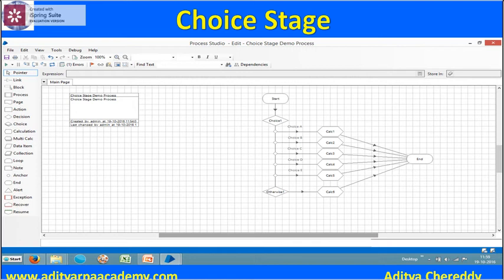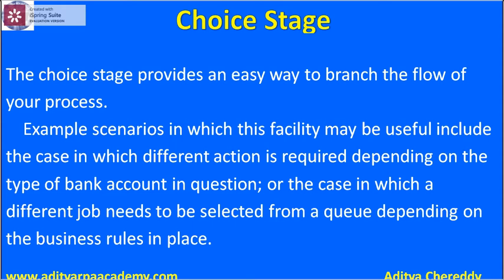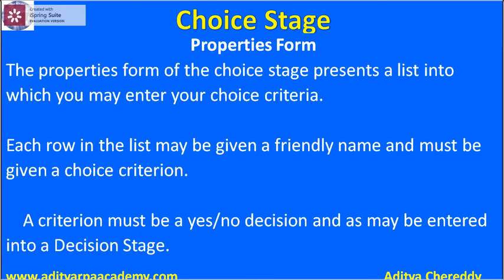I'm giving an example about the choice stage. You can give five directions — if those five conditions are not fulfilled, it will take the otherwise direction. Next provides an easy way to branch the flow of your process. Example scenarios where this is useful include cases where different actions are required depending on the type of bank account, or where a different job needs to be selected from your queue depending on the business rules in place.